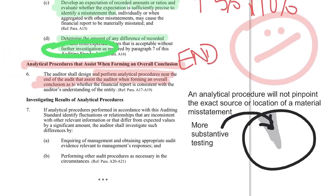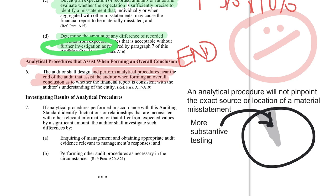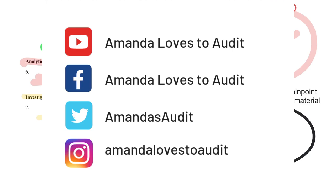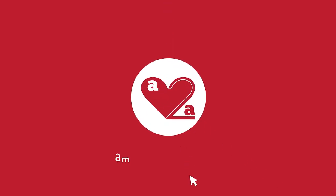If we do find anything where we identify fluctuations or relationships inconsistent with information, I have to investigate — document, investigate, talk to management — and then perform other audit procedures like vouching, tracing, and inspecting documents. I hope this explanation of ASA 520 was useful; I didn't go through specific ratios here but there are plenty of videos on YouTube for that. Thanks very much for watching — if you thought the video was great I'd love a thumbs up, pop questions in the comments, catch me on social media, and consider subscribing.